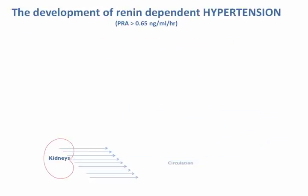But how does renin-dependent hypertension develop? Renal nephrons are constantly working together to sustain an adequate level of glomerular filtration rate. This is accomplished in part by changing the amount of renin in the circulation. To that end, each nephron increases its secretion rate of renin when blood pressure falls and decreases its secretion rate of renin when blood pressure rises. The overall rate of renin secretion, and thus the circulating PRA level, is the integrated sum of all of the renin secreted from all of the nephrons.